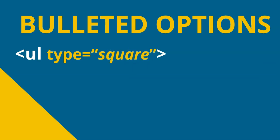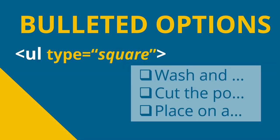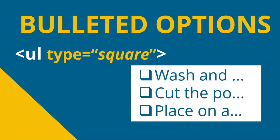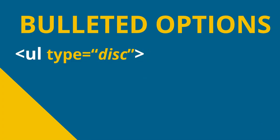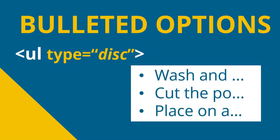Maybe you want to make it squares — you can say type equals square, and then it'll make little square blocks in front of each particular item. Or you could say disk, and if you use the word disk, that will be like the default: those round circles that are colored inside. The disk one is the default.